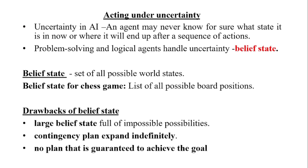Next, we can see uncertainty in AI, that is artificial intelligence. In AI, an agent may never know for sure what state it is in now or where it will end up after a sequence of actions. An agent perceives its environment through sensors and acts upon that environment through actuators.